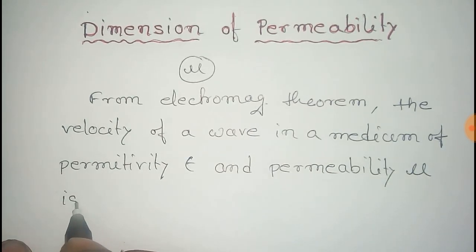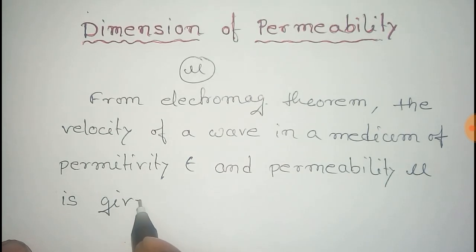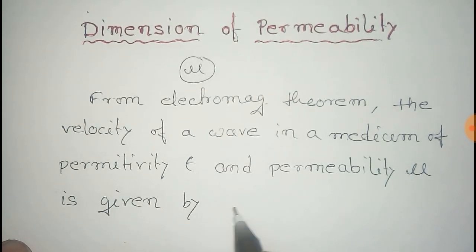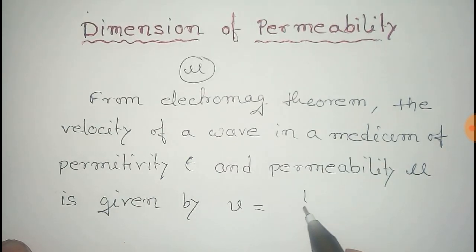is given by v equal to 1 by root over mu into epsilon.